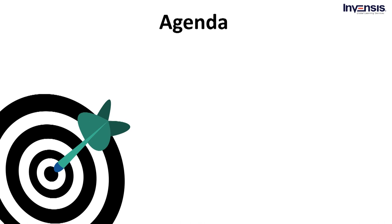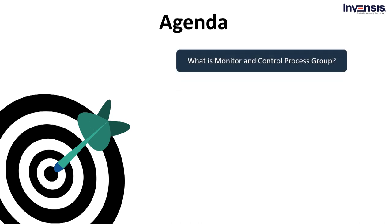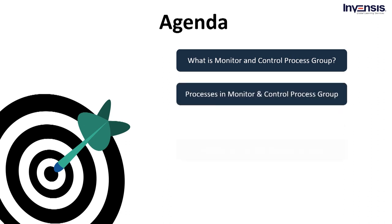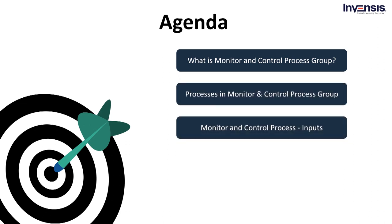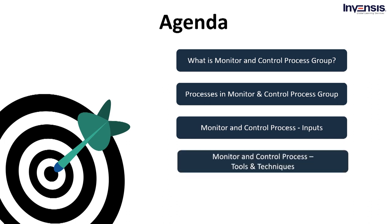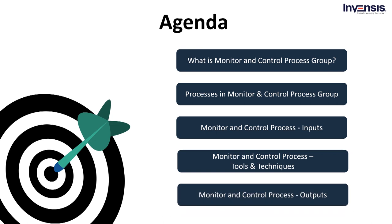Before we start, let us quickly go through the agenda. To begin with, we will understand what the monitor and control process group is, and then talk about the processes in the monitor and control process group. Next, we will talk about inputs and the tools and techniques used, and finally we will conclude by addressing the outputs for the monitor and control process.